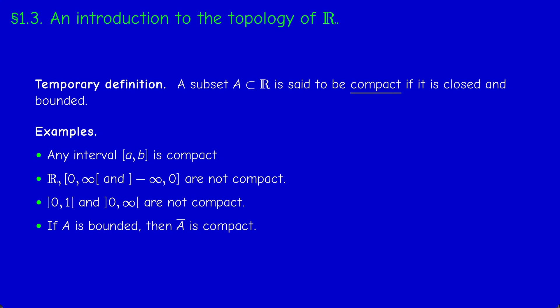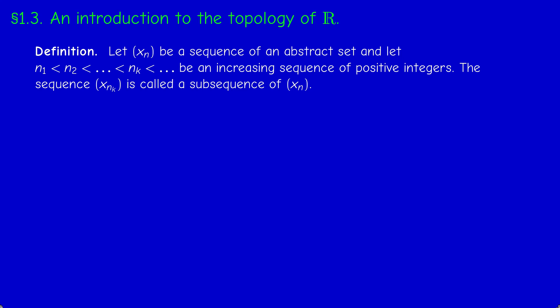Now the second concept is what we call sequential compactness. First, what do we mean by a subsequence of a sequence? Let (xₙ) be a sequence and let n₁ < n₂ < ... < nₖ < ... be an increasing sequence of positive integers. The sequence (xₙₖ) is called a subsequence of (xₙ). A subsequence is obtained by removing certain terms of the original sequence. Note that we always have nₖ ≥ k.